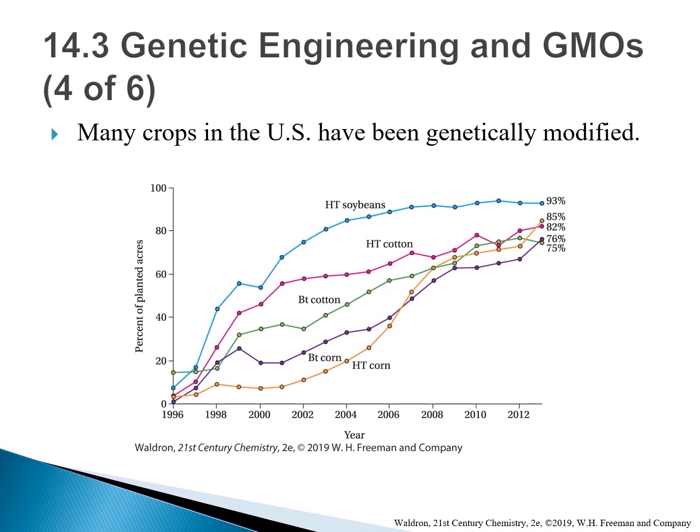The glyphosate molecule inhibits one of the steps in the pathway that plants use to make certain amino acids essential to plant growth. Once this process is blocked, the plants cannot grow. Because this pathway occurs only in plants and bacteria, glyphosate is harmless to animals. When Roundup is applied to a soybean crop, it kills the weeds and leaves the HT soybeans untouched.